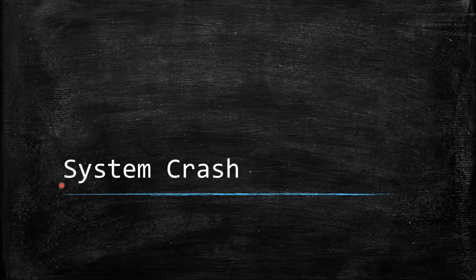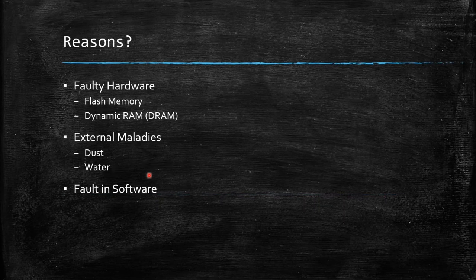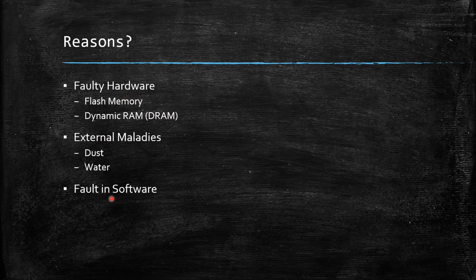Now that we know how a switch starts and how to connect to it, let's move to the core topic: system crash. There are mainly three reasons for a system crash: faulty hardware, external factors like dust and water, and faults in software. Faulty hardware is rarely the cause. The main reason is a fault in software, with external factors like dust and water as the second most common cause.